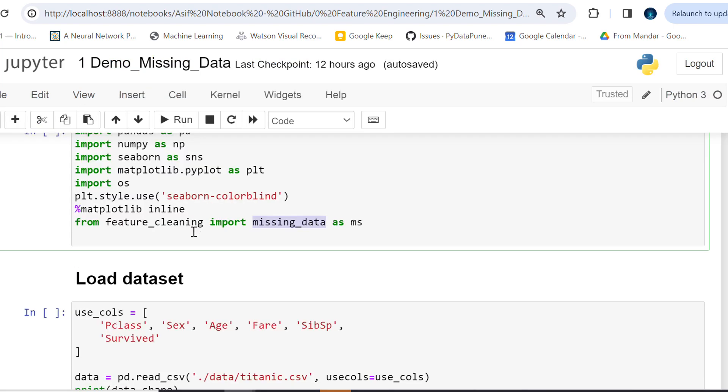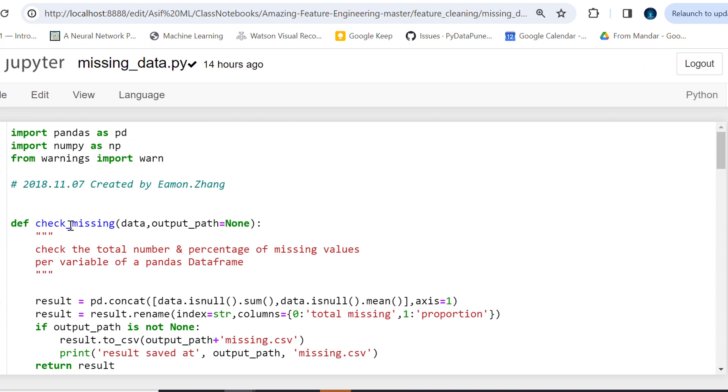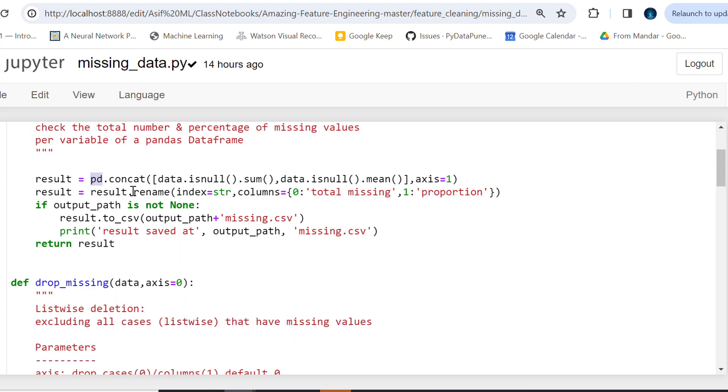For now, let's see how many missing values we have. For that I've used a simple function, check_missing. I'm calling this check_missing, and here I'm using pandas.concat, and we're using a very simple function on the data: data.isnull().sum() to get the fields—one, two, three, four—how many fields we have null.